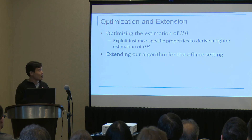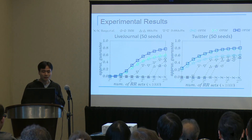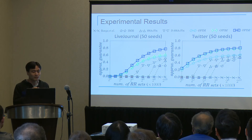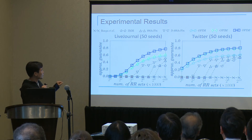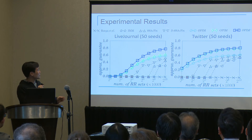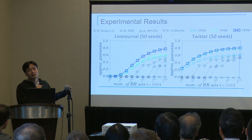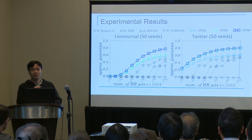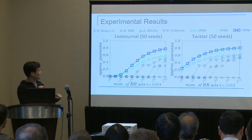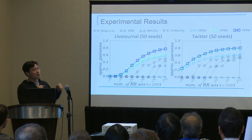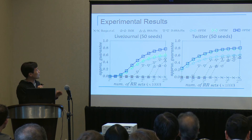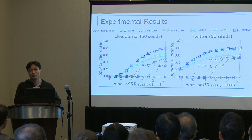We also show that our algorithm can be extended to the offline setting. Here is a representative subset of the experimental results. The x-axis represents the number of samples generated by the algorithm, and the y-axis represents the approximation guarantee the algorithm can report for a given number of samples. The colored lines represent different variants of our algorithm, while the black line represents the adaptation of existing offline algorithms to the online setting. The main message is that with the same number of samples, our algorithm gives much better approximation guarantees.